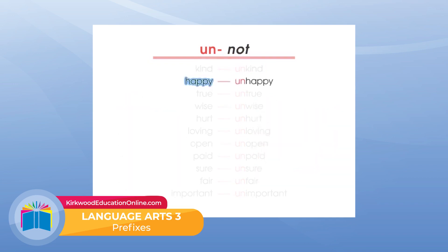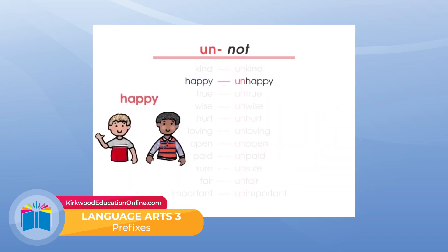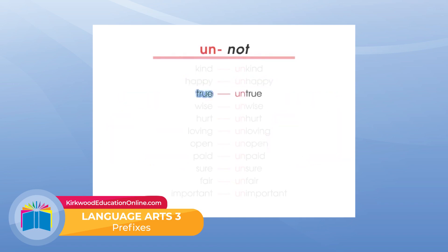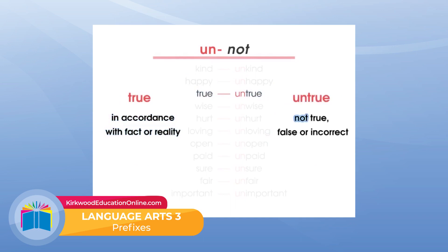Or 'happy.' Happy is a state of being in which you feel good inside, versus 'unhappy.' The prefix U-N put before happy means unhappy, means sad. 'True' means in accordance with fact or reality. 'Untrue' means false or incorrect — not true.